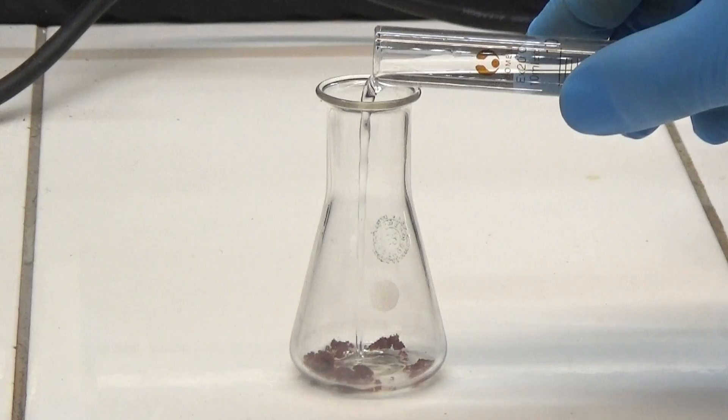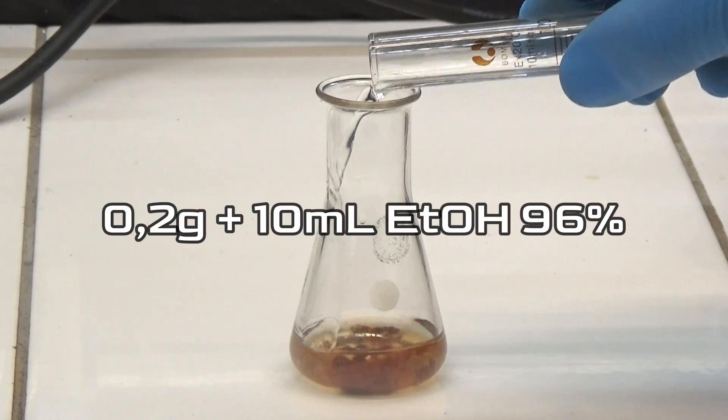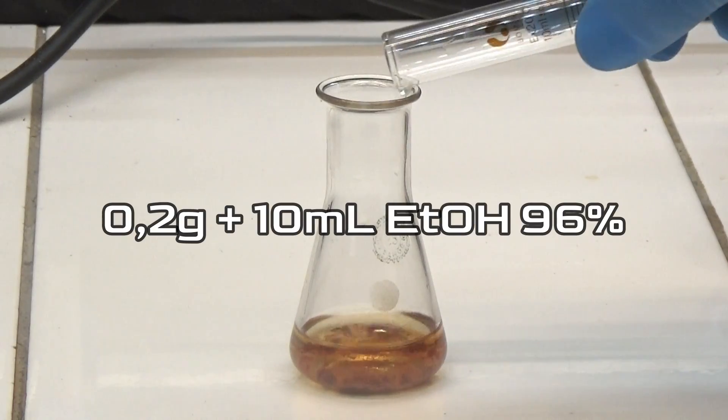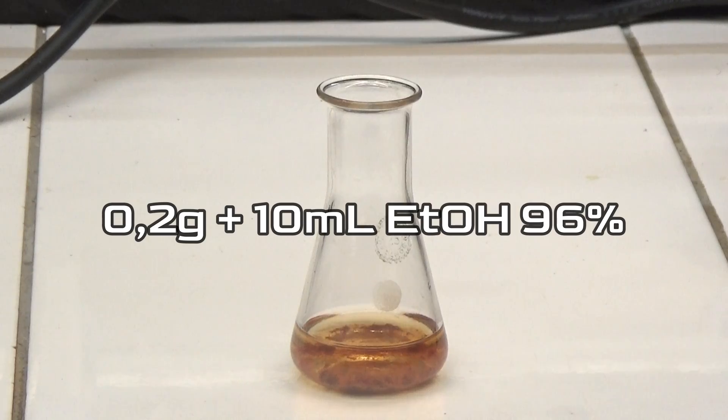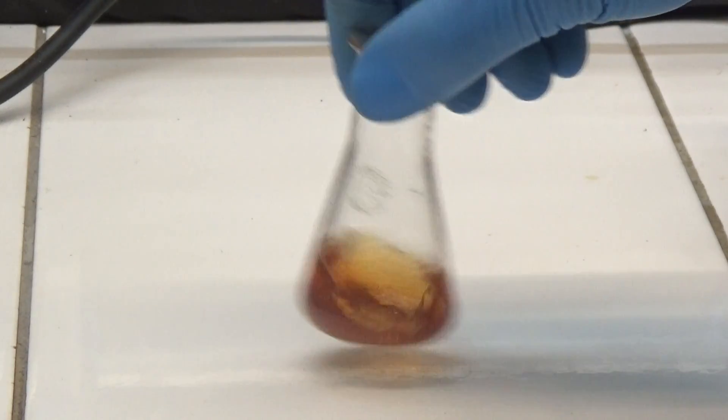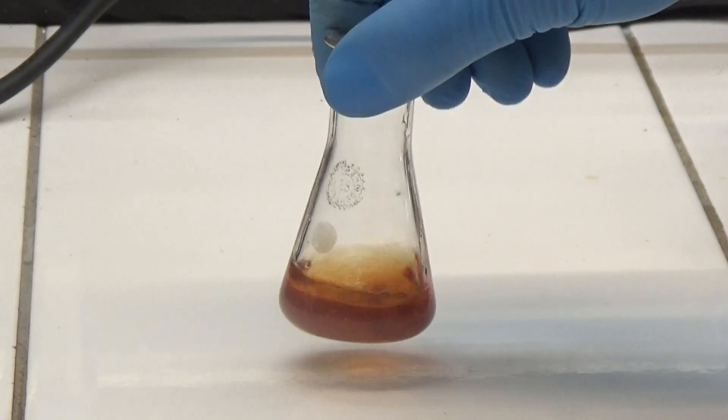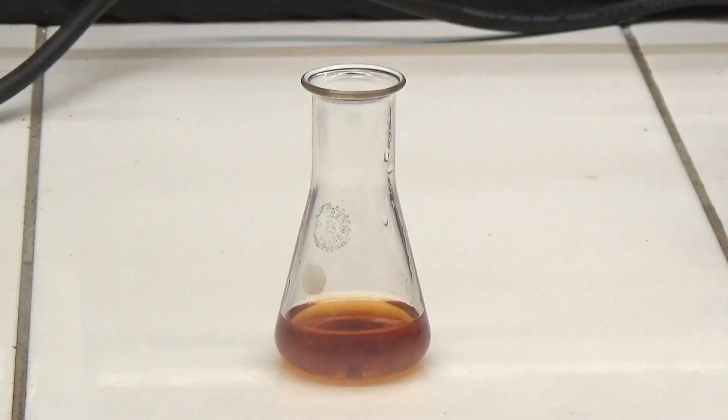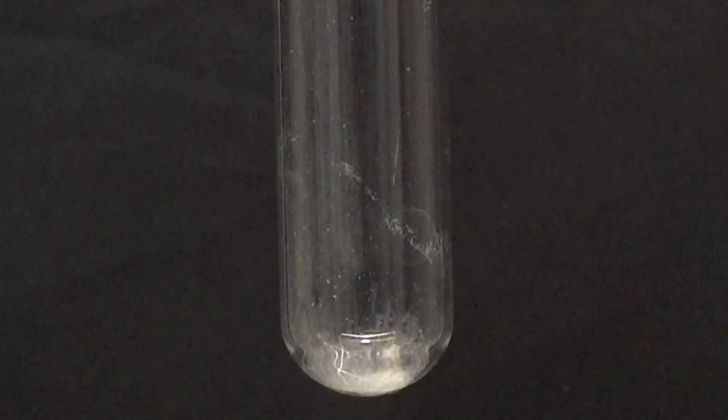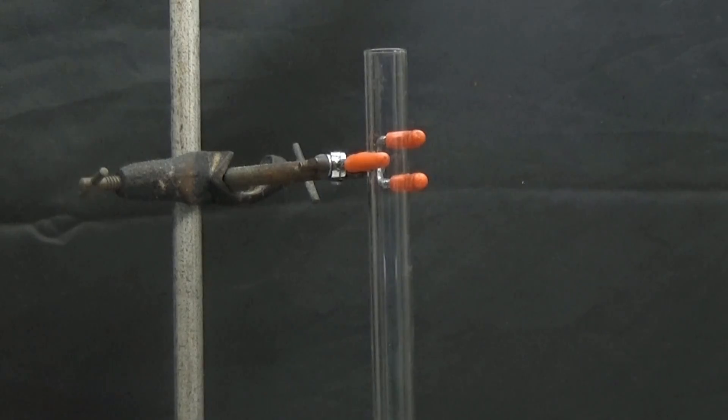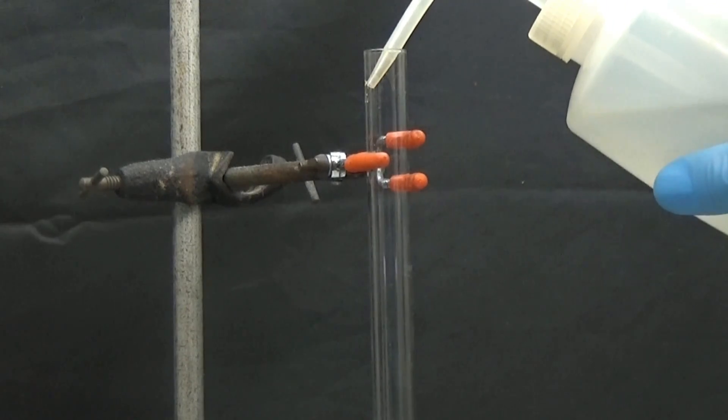To prepare the amino acid reagent, first we prepare a 2% ninhydrin solution by dissolving 200 mg in 10 ml of 96% ethanol. In a test tube, we put a little glycine, an alpha amino acid, and dilute it with 10 ml of distilled water.